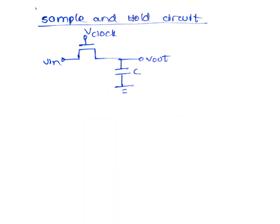This is the basic circuit of sample and hold. It includes a MOSFET which acts like a switch and a capacitor. A clock is connected to the gate of the MOSFET which decides the sampling frequency.